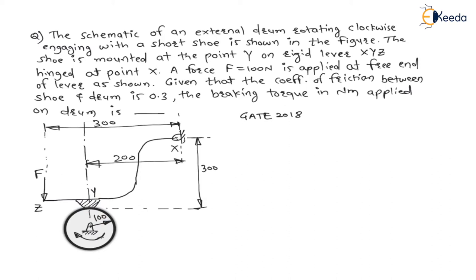The force F equal to 100N is applied at the free end of the lever at location Z. The coefficient of friction between shoe and drum is given as mu = 0.3. The question asks us to find the braking torque in newton meter applied on the brake drum.